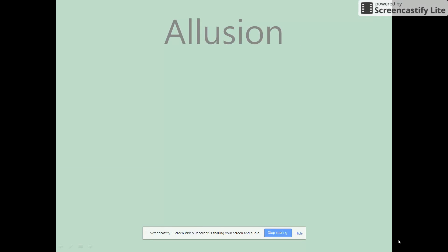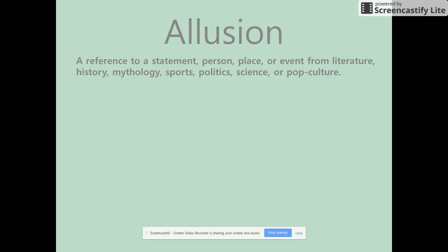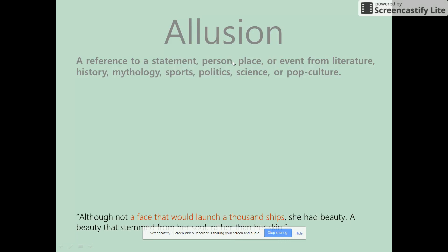The first term we're going to talk about is allusion, and that is a reference to a statement, person, place, or event from literature, history, mythology, sports, politics, science, or pop culture — or in the case of the book we're going to be reading, the Bible, which is often referenced in literature. The author is expecting you to know what these references are so you can understand them in the context of the story.